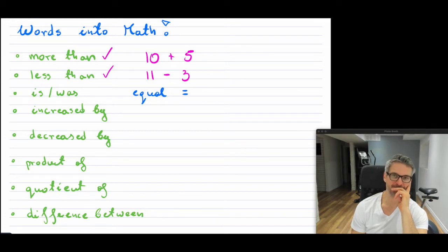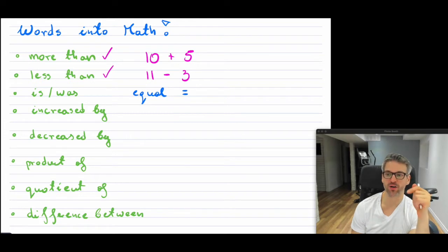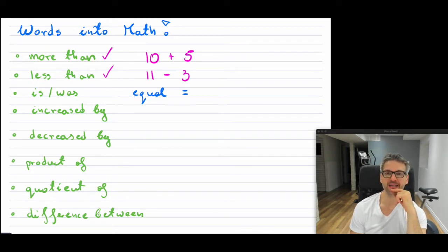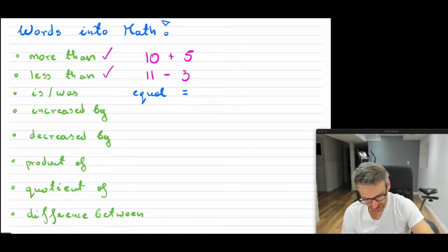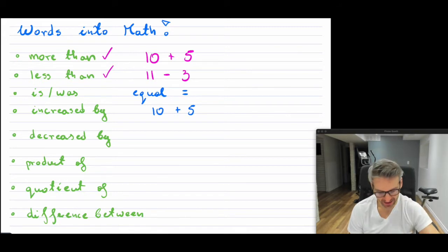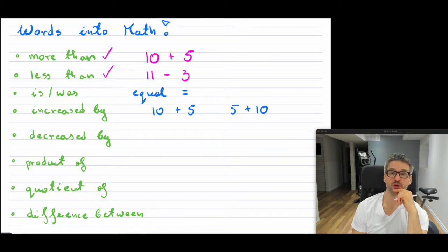Now, "increased by" is a little bit different than "more than" or "less than." "More than" kind of parallels "increased by," and "less than" kind of parallels "decreased by," but they're used differently. So if you say "ten is increased by five," you can write ten plus five. If you said "five is increased by ten," that would be five plus ten.